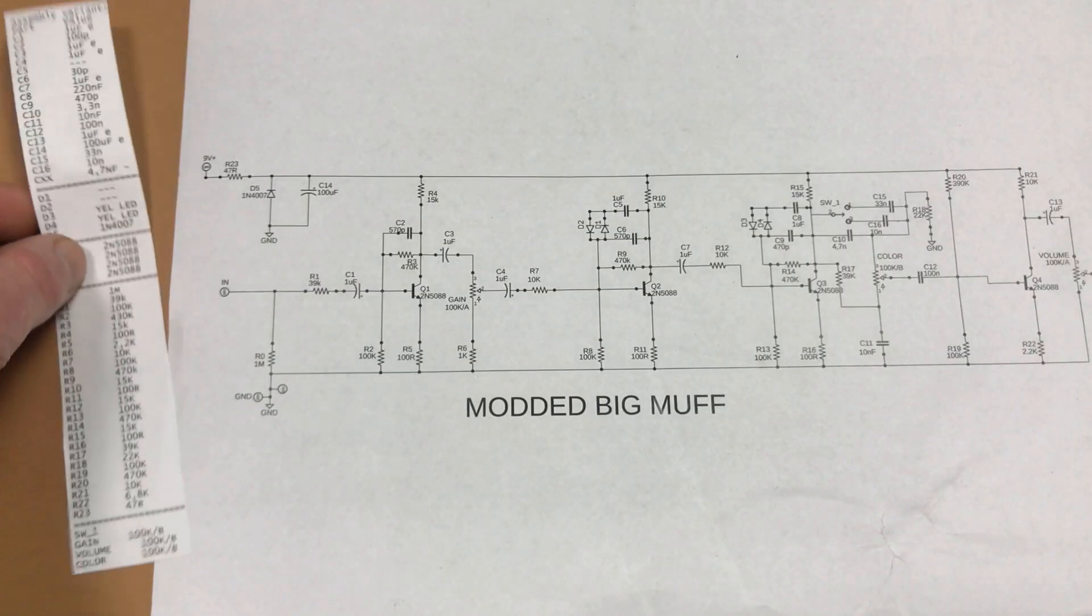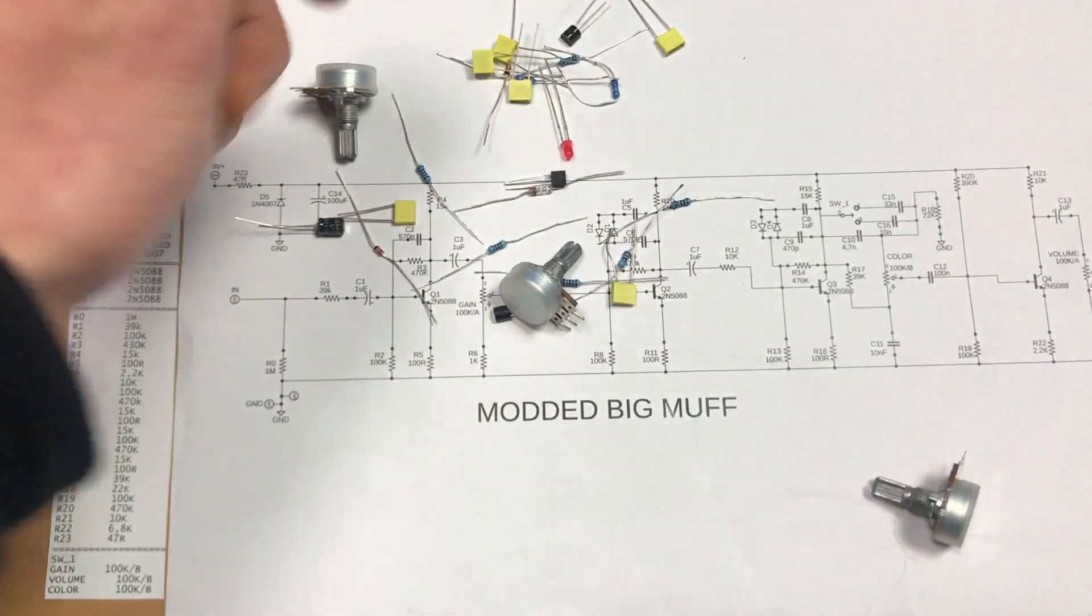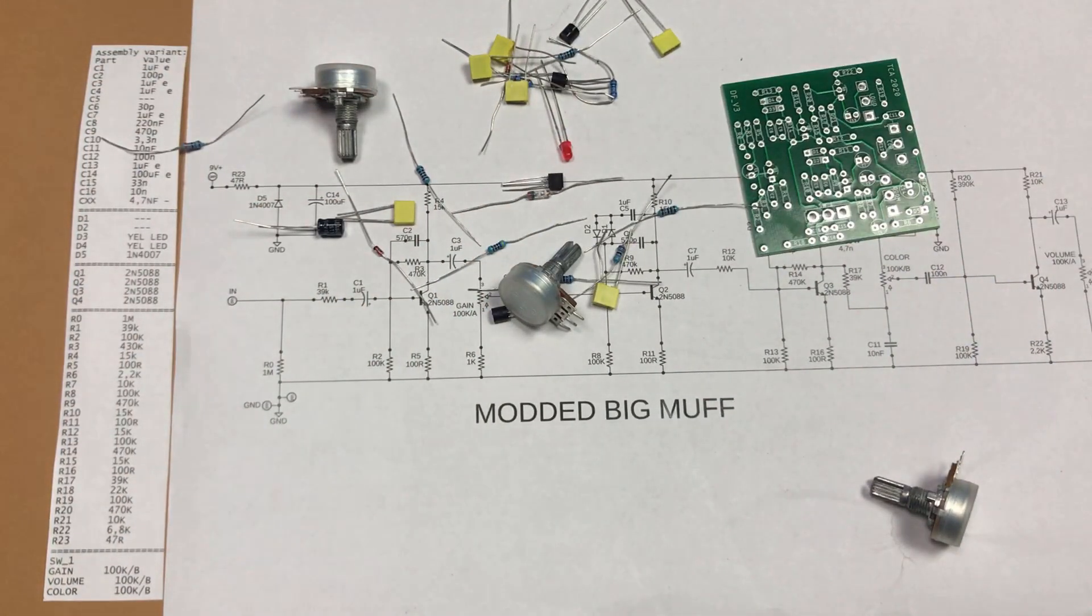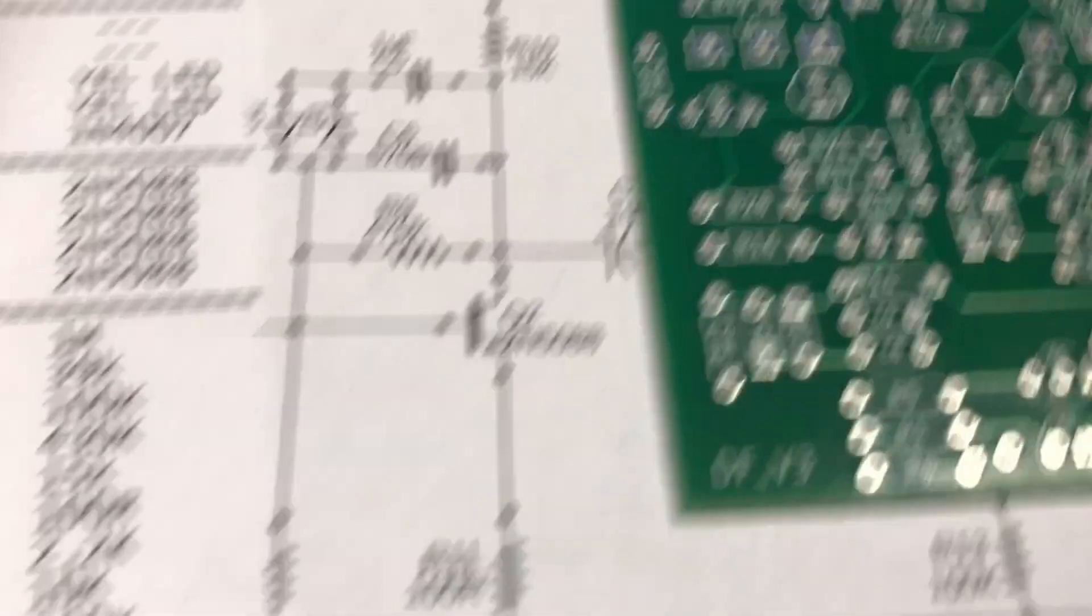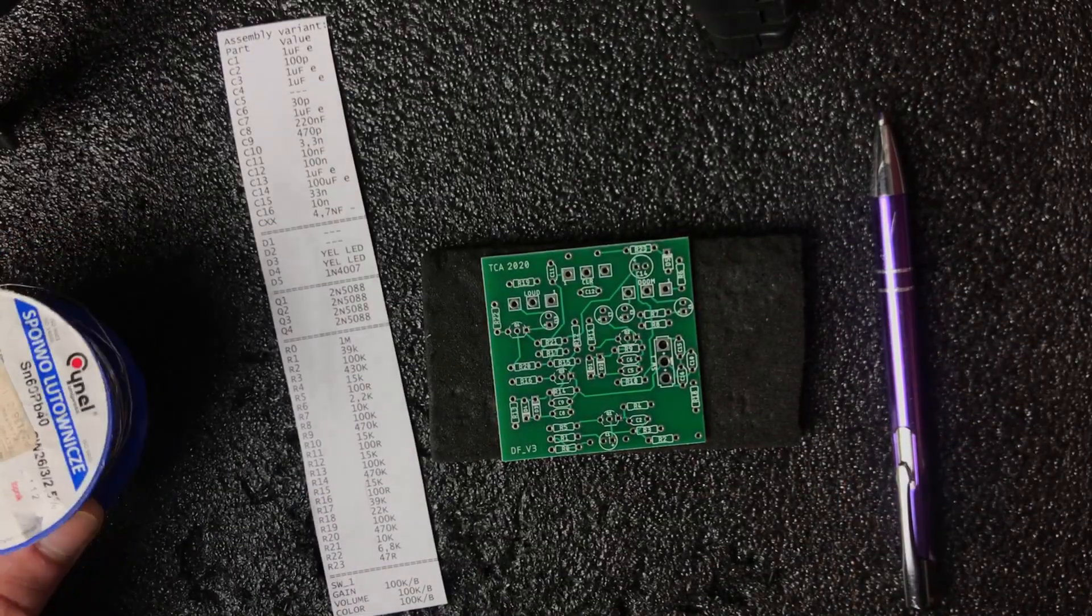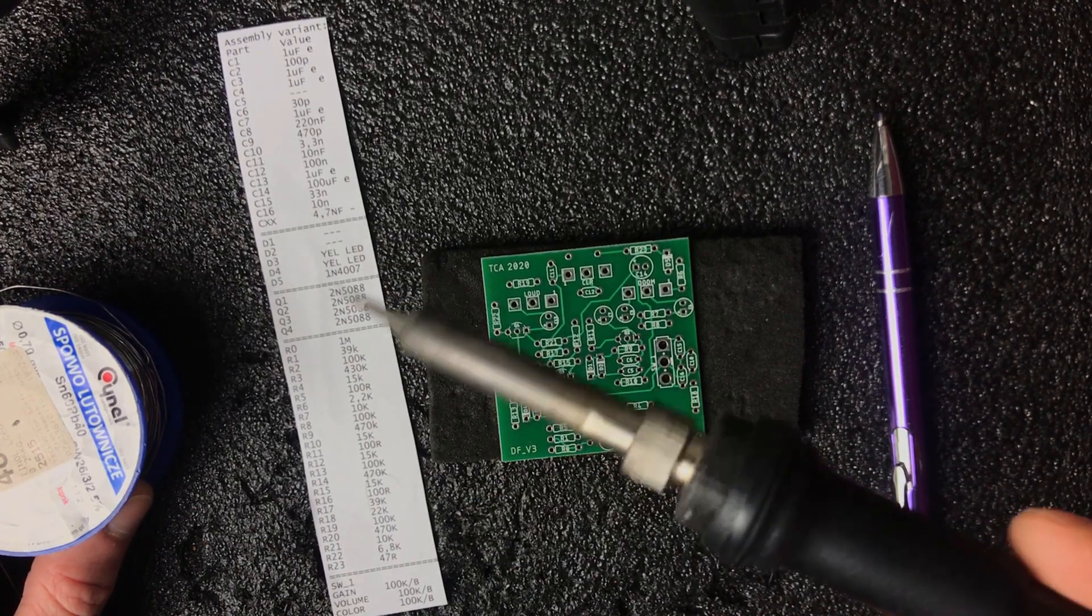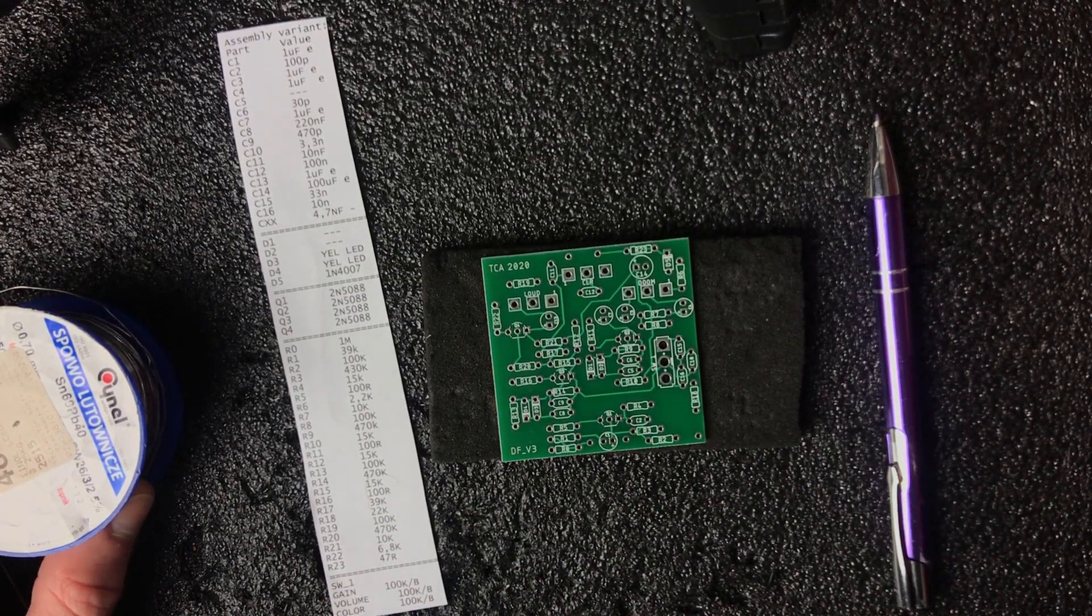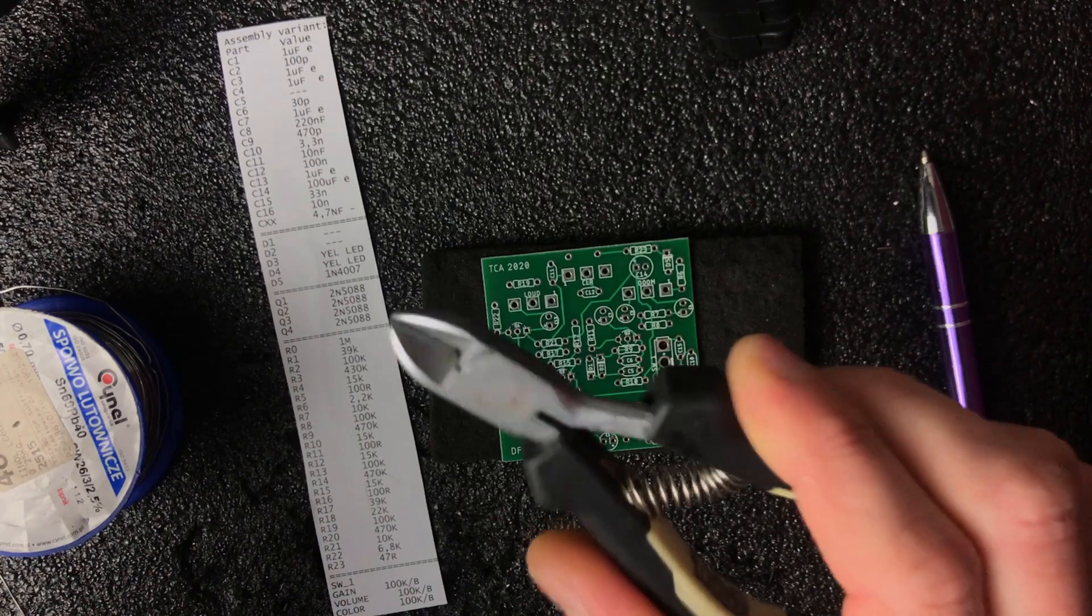Okay so to build a pedal you need of course schematics, bill of materials and of course parts and PCB board. Bill of materials is just a list of parts with numbers and you will find the same numbers on a PCB. Of course you will need some solder and soldering iron and something to snap the legs after soldering.